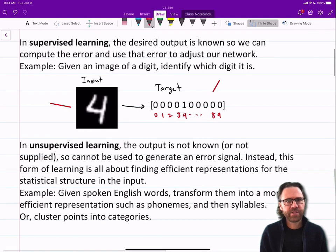This one, the target for this image is four. Okay, that's supervised learning. You have a target, and you use the error to learn.